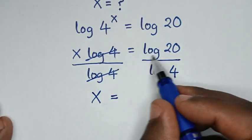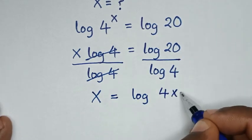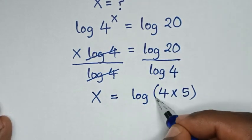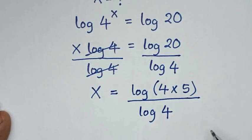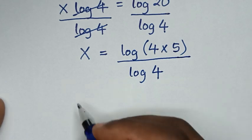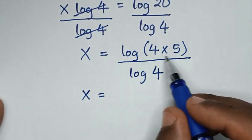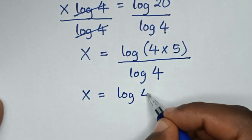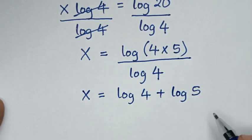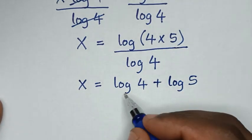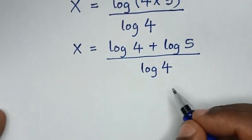Log of 20 is the same as log of 4 times 5, over log of 4. In the next step, log of 4 times 5 is the same as log of 4 plus log of 5, then over log of 4.